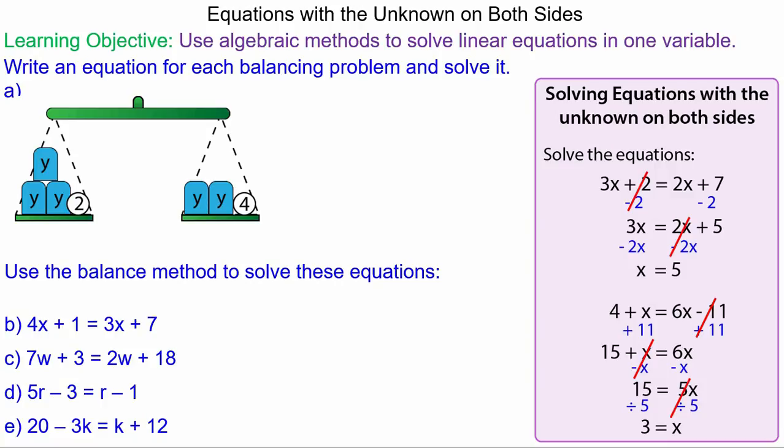We can create our equation because on this side of the scale we have 3y plus 2 and this is perfectly balanced, equals to 2y plus 4. So we can solve this equation: 3y plus 2 equals 2y plus 4.